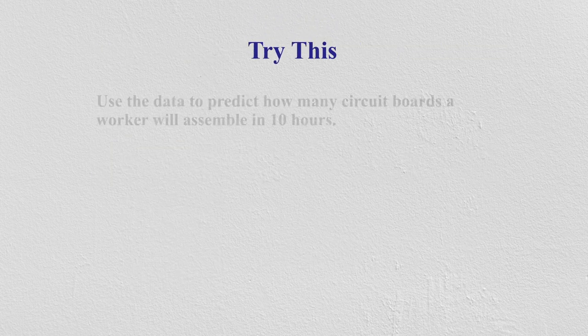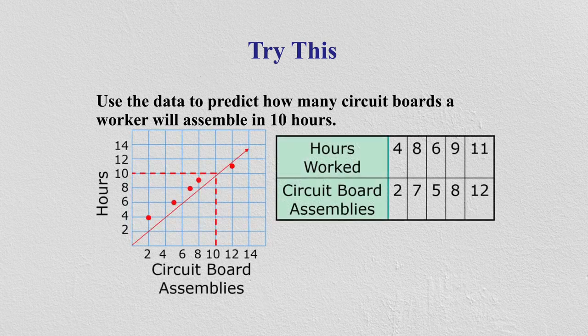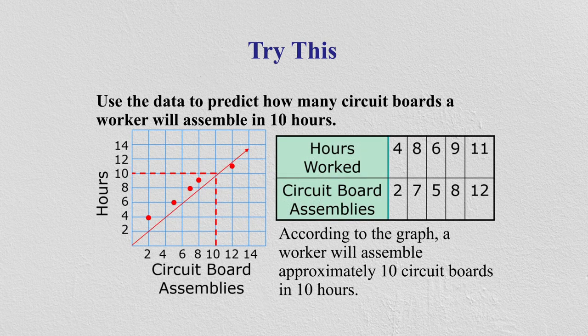The scatter diagram is quite helpful and gives real predictions. In another example, hours worked is placed on the vertical axis and circuit boards assembled on the horizontal axis. According to the graph, a worker will assemble approximately 10 circuit boards in 10 hours.